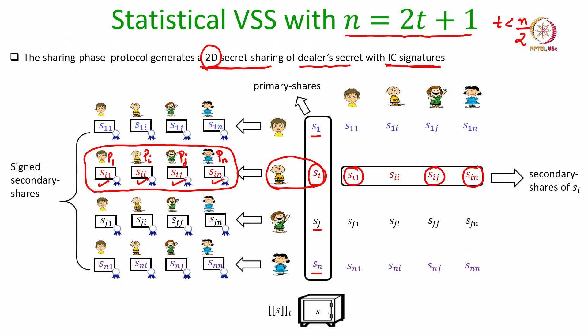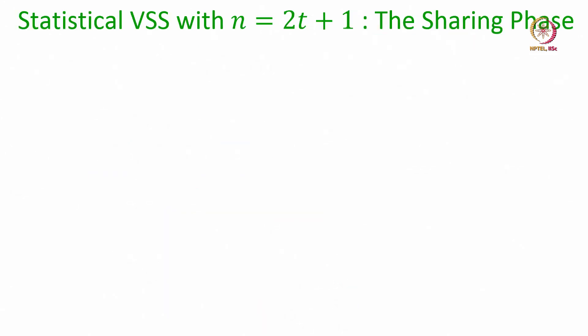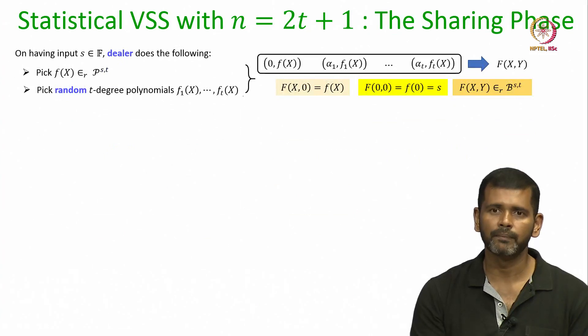I would also like to stress that in one of our earlier lectures we had seen that if you have a value which is 2D secret shared with IC signatures then we can robustly reconstruct it. Recall that we will be using this notation for representing a 2D secret sharing of any value with IC signatures. Here is the sharing phase protocol.